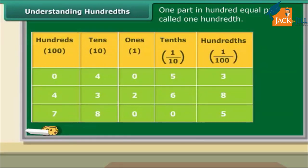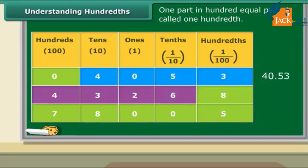Now, concentrate on the table and let us read decimals from it. Look at the first row. 40 plus 5 tenths plus 3 hundredths will make 40.53. Now, focus on the second row. 4 hundreds plus 3 tens plus 2 ones plus 6 tenths and 8 hundredths will make 432.68. Now, pay attention to the third row. 7 hundreds plus 8 tens plus 5 hundredths will make 780.05. We can extend the place value table further from hundredths to thousandths.